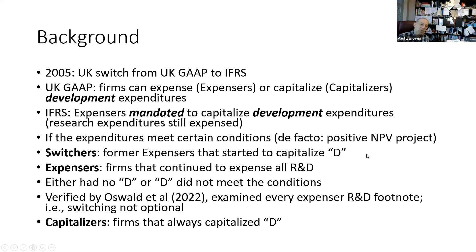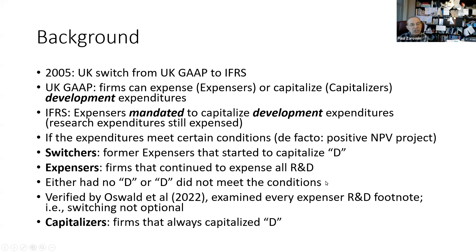So we have two groups of firms. Switchers were former expensers — they expensed everything under UK GAAP and now started to capitalize the D. And expensers — firms that had expensed everything under UK GAAP and continued to expense everything under IFRS. Why did they continue to expense? Either they had no D, everything was R, or their D did not meet the conditions for capitalization.